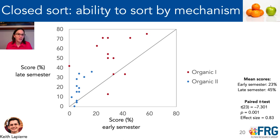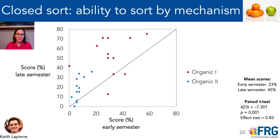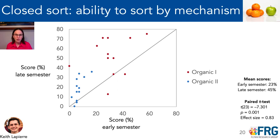Knowing that the ability to sort by mechanism and by deeper process is desirable for interpreting existing reactions, predicting future reactions, and translating to other contexts — and knowing that students can gain expertise in it — it becomes important to know how to incorporate these ideas into a classroom setting. Here are a couple of ideas about how we can help students develop the skills to organize their thinking by patterns of mechanism and develop that mechanistic thinking.